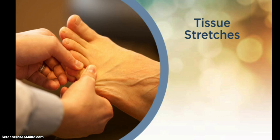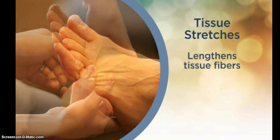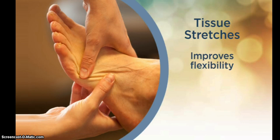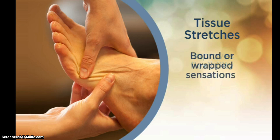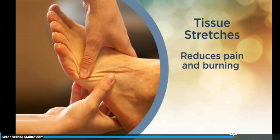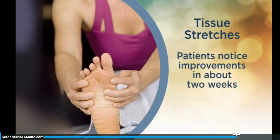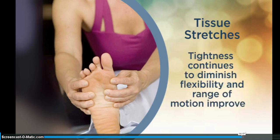Keep in mind that your soft tissue fibers have shortened and tightened over time. Stretching gradually lengthens the tissue fibers, releases tightness, improves flexibility, and diminishes symptoms associated with contracture such as tightness, bound or wrapped sensations, or even painful sensations like burning that can be associated with both neuropathy damage as well as contracture. Stretching may be uncomfortable at first. Patients who stick with the recommended stretches notice significant improvements in about two weeks or less. Thereafter, with continued stretching, tightness continues to diminish and flexibility and range of motion improve.